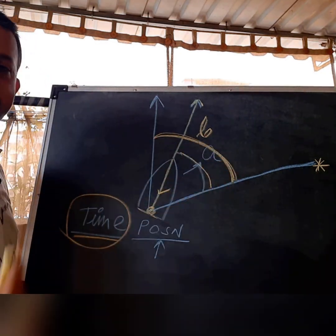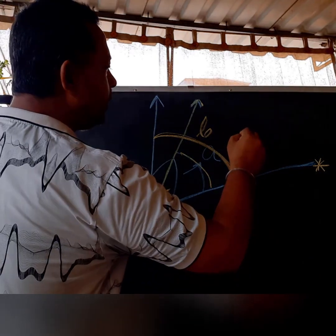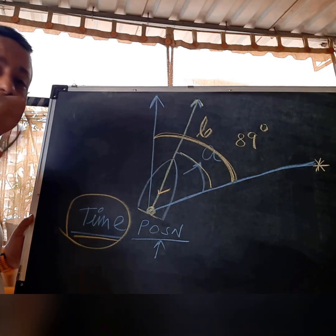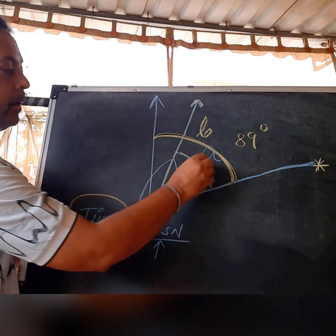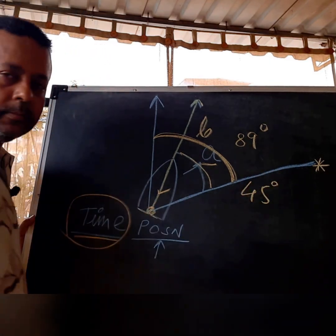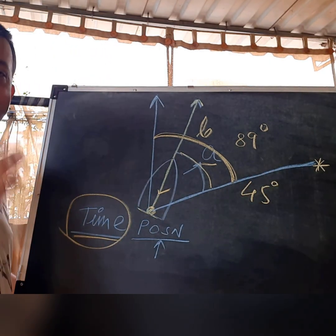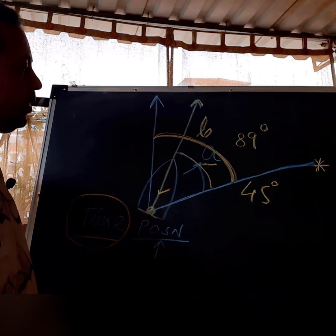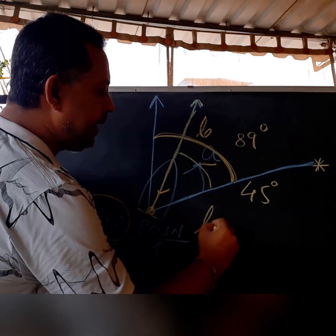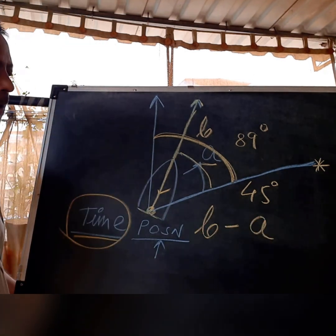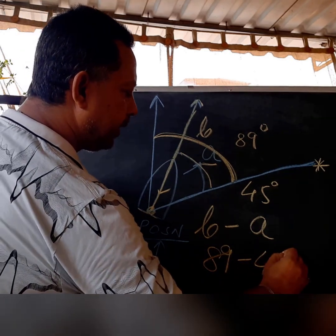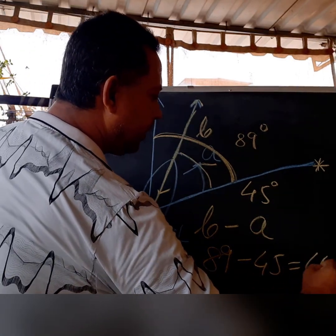Suppose the sun's azimuth that we have found is 89 degrees, and the angle A that you have measured is 45 degrees. You have to measure the angle as precisely as you can. The vessel's heading will be angle B minus angle A — that is 89 degrees minus 45 degrees, which equals 44 degrees.